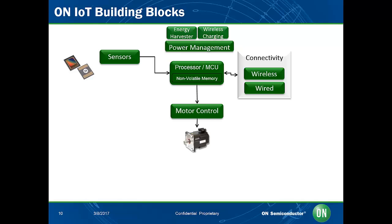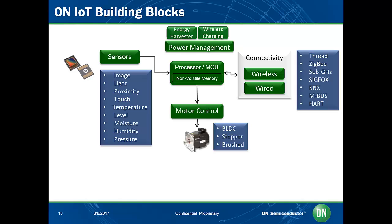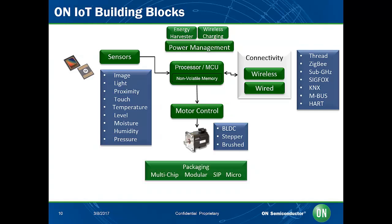We offer a large variety of sensors, both wired and wireless connectivity, supporting numerous popular connectivity standards and platforms, the central processor, as well as motor control and actuator blocks. On Semiconductor provides one of the broadest image sensing portfolios in the industry, complemented by solutions for light, proximity, touch, temperature, level, moisture, humidity, and pressure sensing. For motor control and actuation, we have solutions from brushless DC motor control, stepper motor control, to brushed motor control. As far as connectivity is concerned, we have solutions ranging from sub-gigahertz to 2.4 gigahertz radio solutions, as well as solutions for wired connectivity. These comprehensive capabilities are complemented by one of the broadest power management portfolios in the industry, including power supply options for both AC and DC operations.